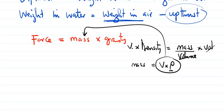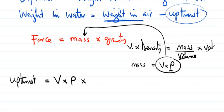So our thrust force equals volume times density times gravity. Plugging in: volume is 0.99 meter cubed. We need the density of seawater and gravity.